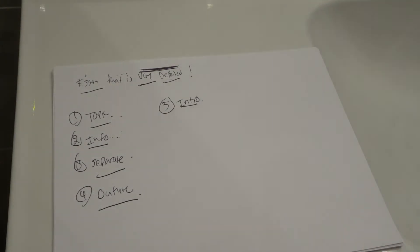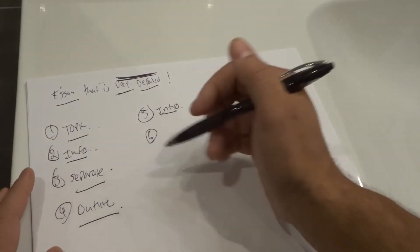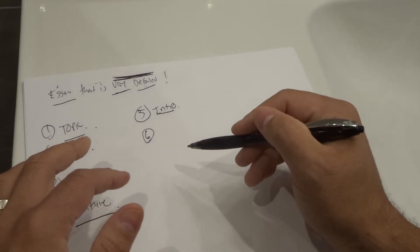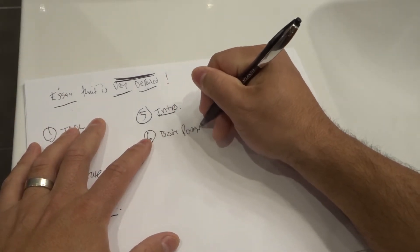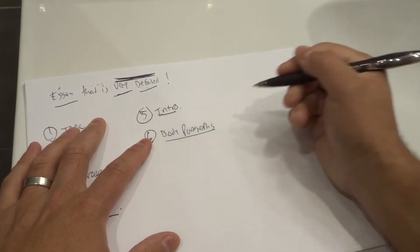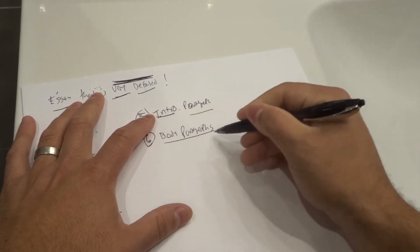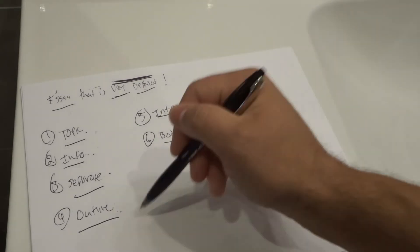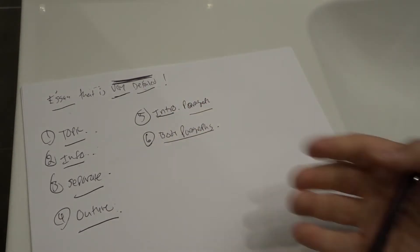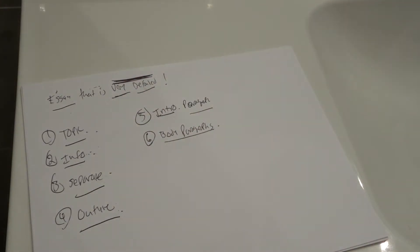Step number six is to write each subsection into a body paragraph. You're going to turn each subsection that you created into a body paragraph. Write as many body paragraphs as you need — one per subsection. So however many subsections you have, each of them becomes a body paragraph.